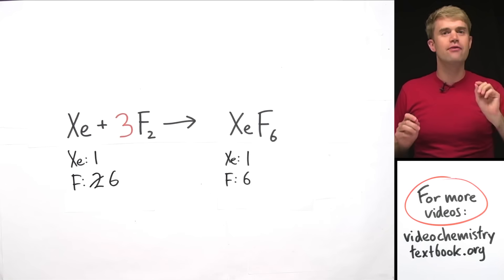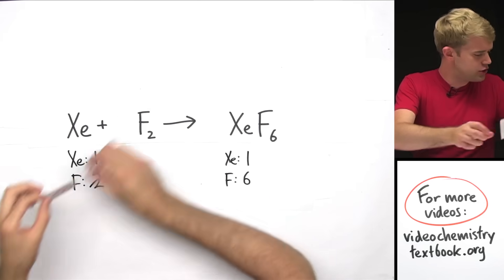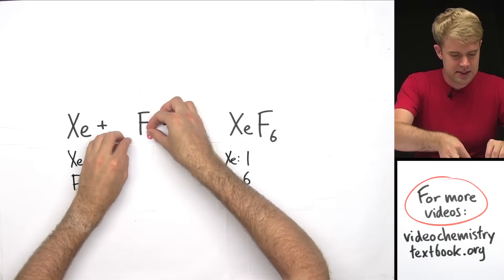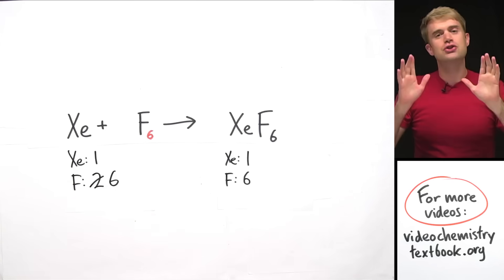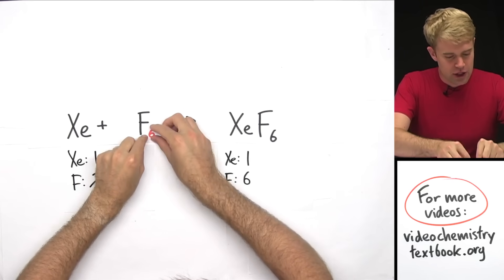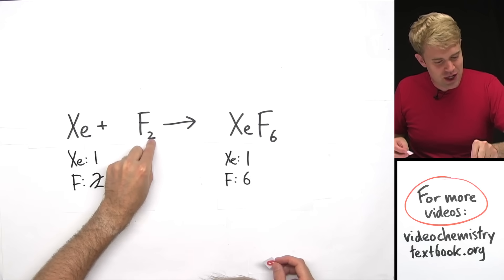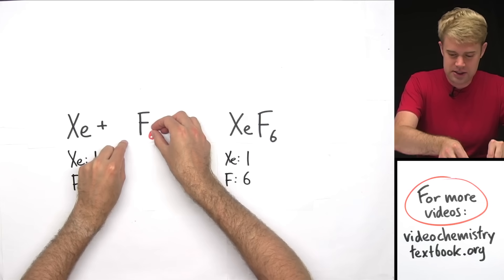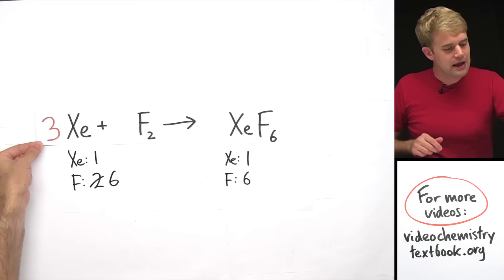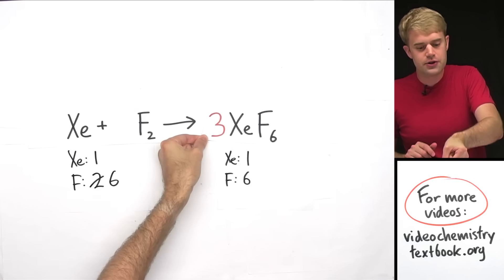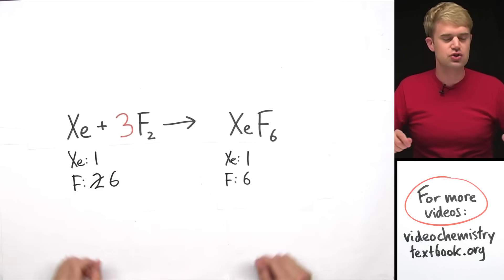Now a very common question: people often ask, why did you put that three there? Couldn't you just change the subscript two to a six and then it would also balance? No — you can't do that, that's a super common misconception. You can't change these subscripts. You can't add them. The only thing you can do is put numbers in front of the elements or compounds, but you can't change or add the subscripts.